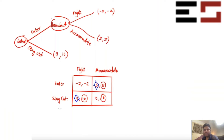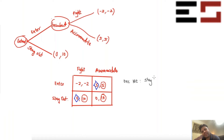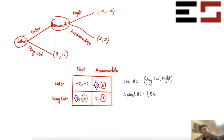How many Nash equilibria are there? Two. One Nash equilibrium is stay out, fight. The second Nash equilibrium is enter, accommodate.